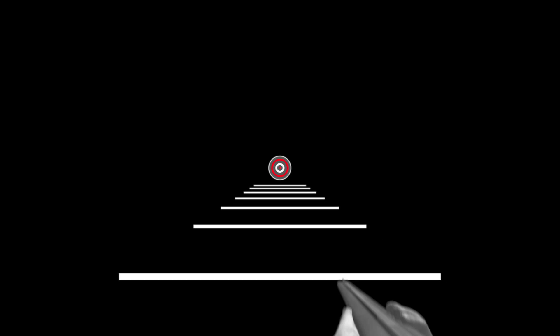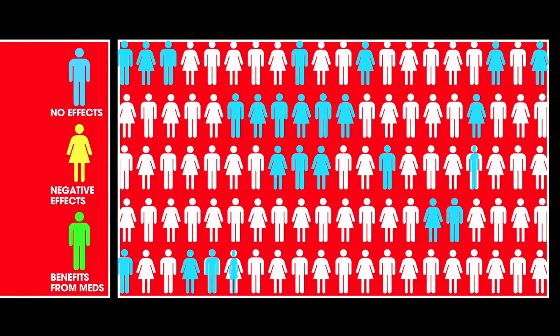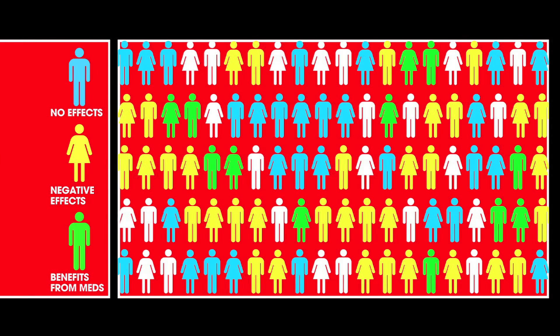This trial and error process is much like shooting a pinpoint target with a shotgun. When multiple people are treated with the same drug, some receive no effects, some receive negative effects, and a lucky group actually benefits from the medication.